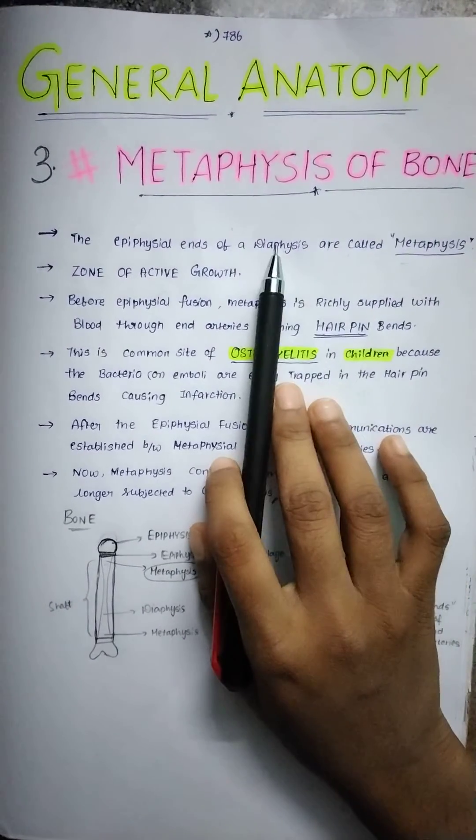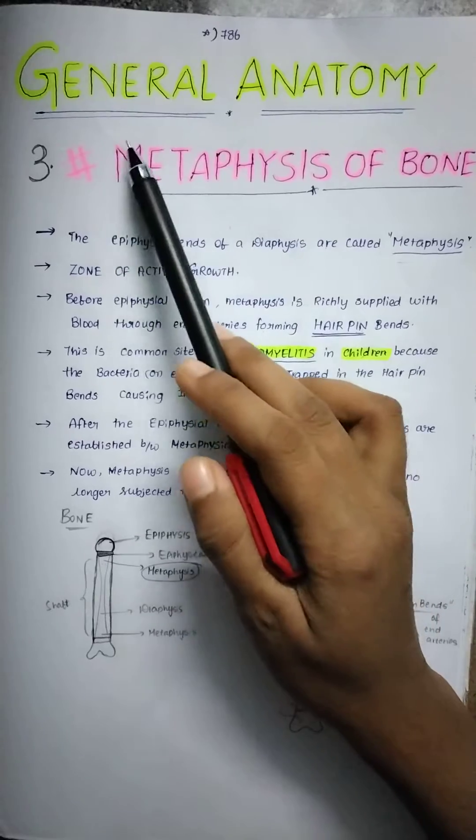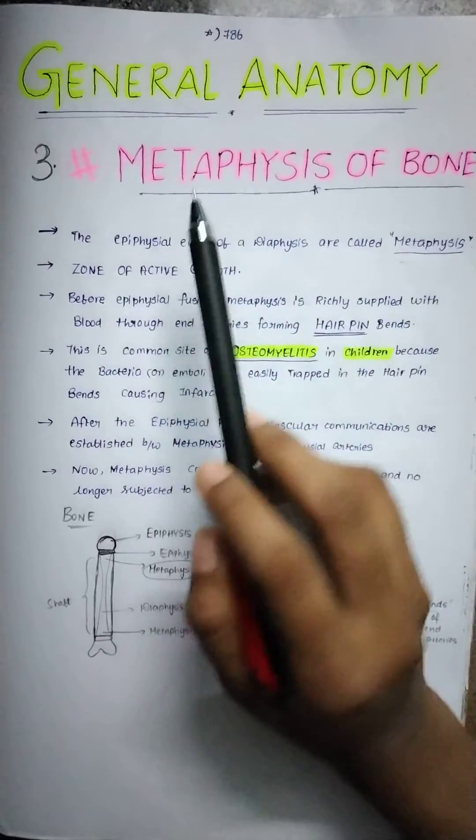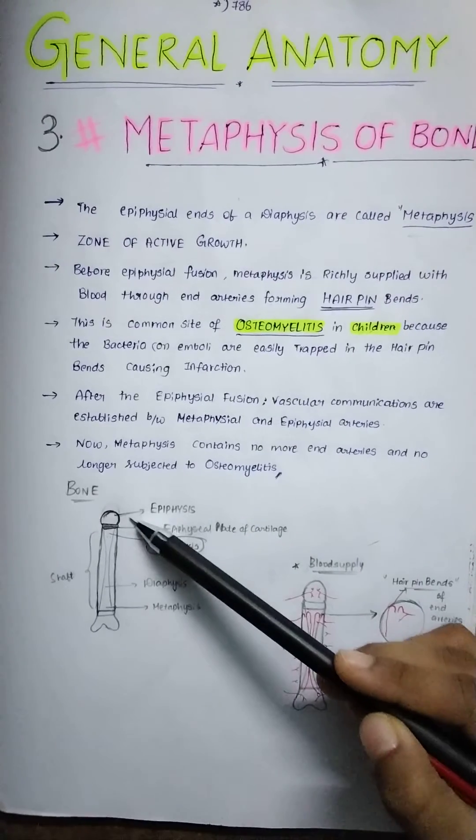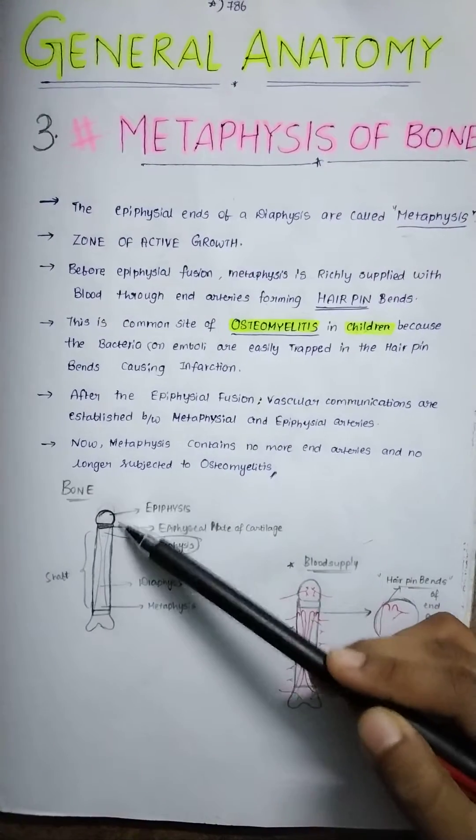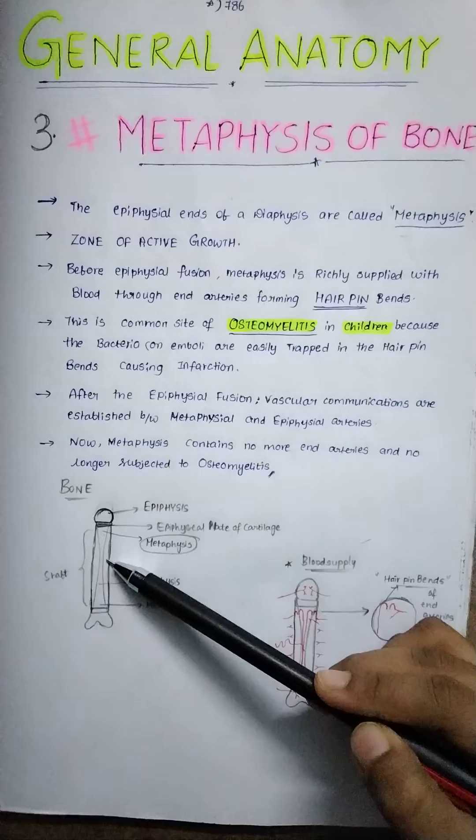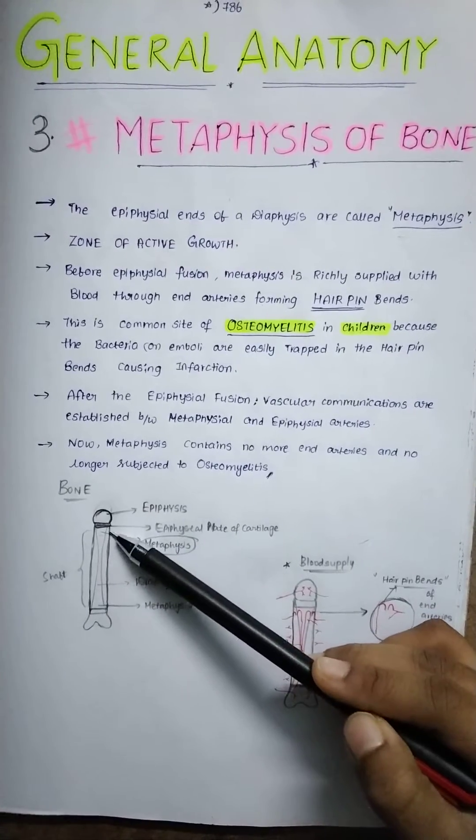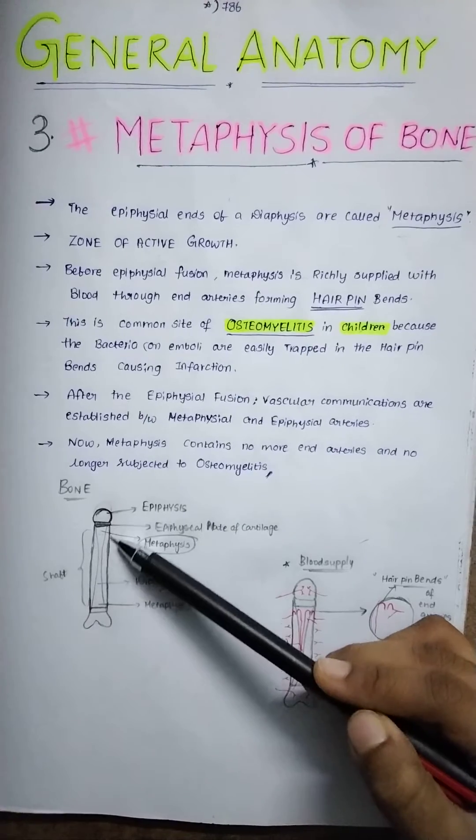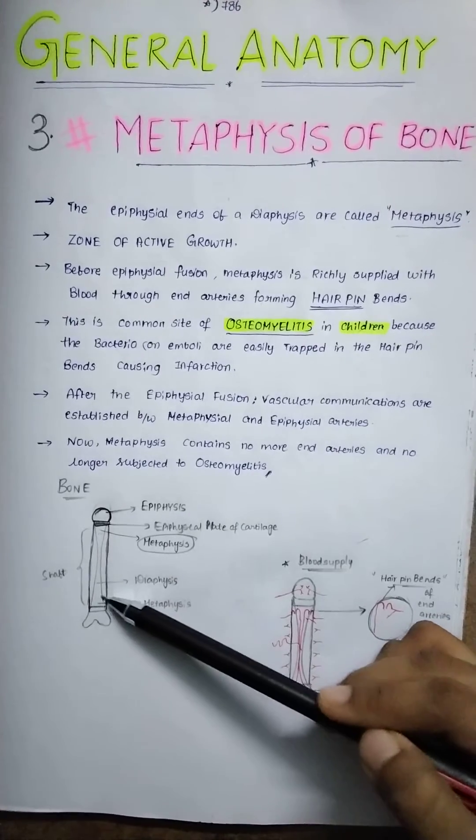Okay, good afternoon to everyone. This is another session discussing general anatomy, the third question about the metaphysis of bone. Before discussing the metaphysis, let's see the parts of the bone. This is the round portion called epiphysis, and this is the epiphysial plate of cartilage. This is the shaft of the bone, and this is the lower end of the bone.